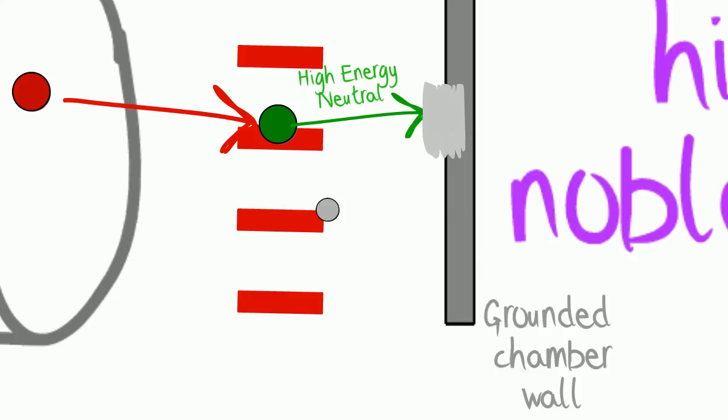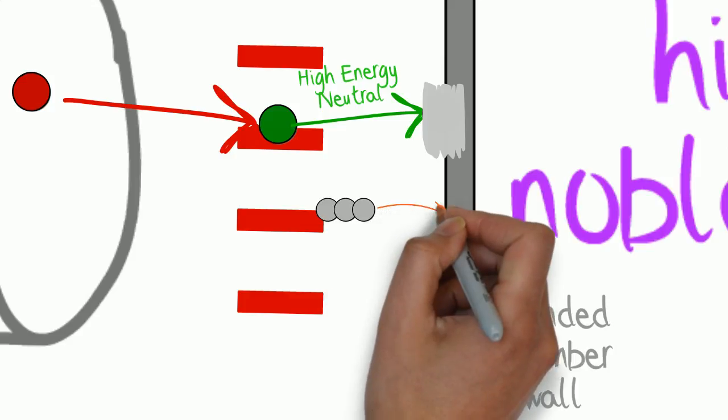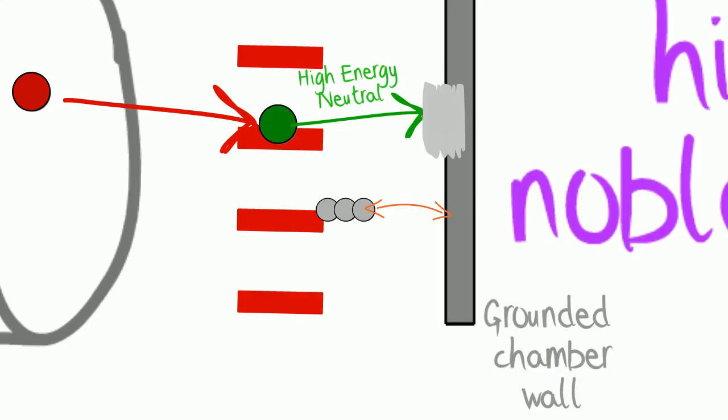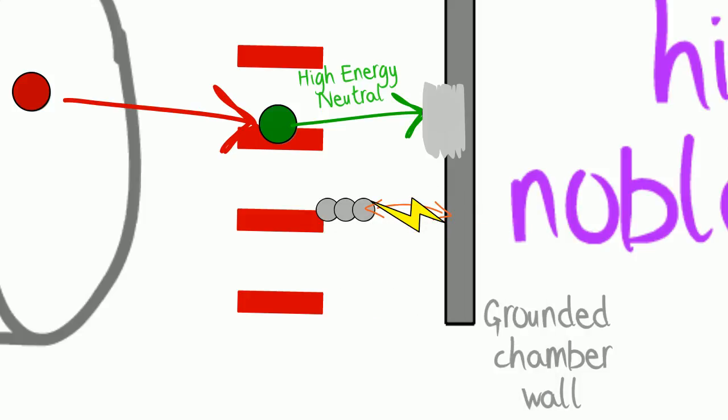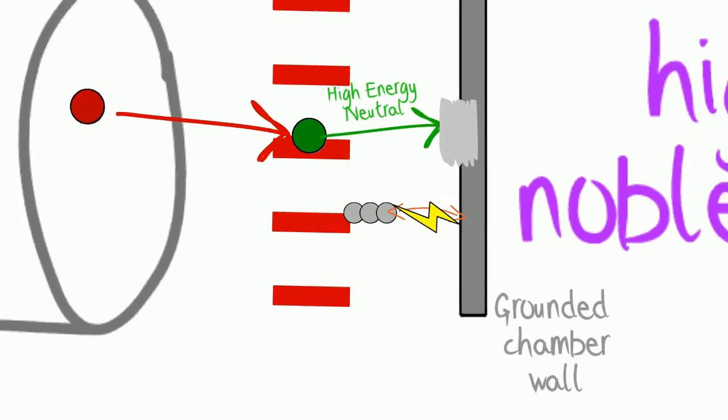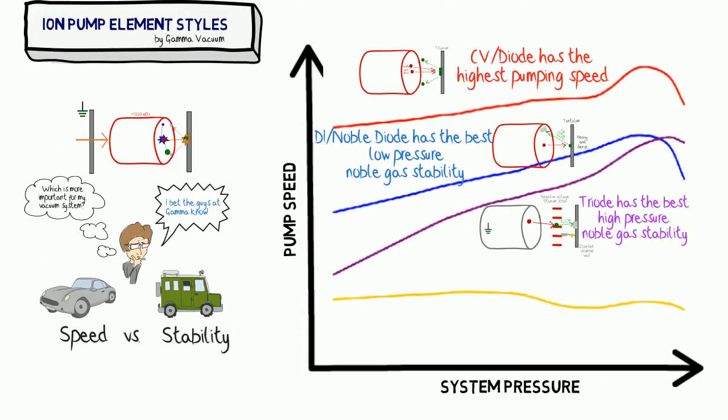The disadvantage here is all those sharp edges, you're going to have titanium molecules that are going to build up on those edges, creating some whiskers. And that distance between grounded surfaces and high voltage is going to shrink over time, and eventually, you're going to get some electrical instability. So I hope you enjoyed that, and if you have any other questions, feel free to give us a call.